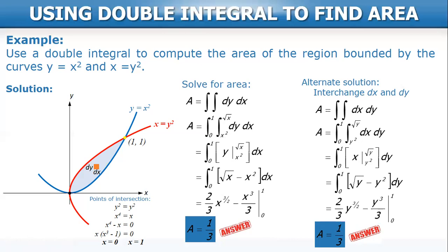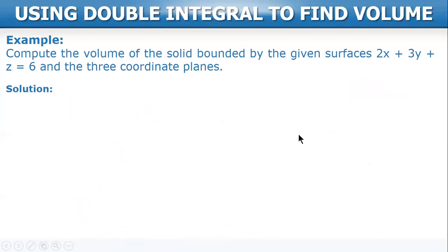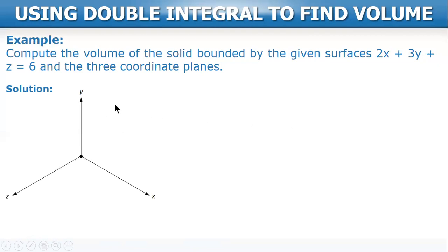Always remember: for a double integral, go back to the rectangular strip to guide your limits. Another application is to use double integrals to find volume. Let's compute the volume of the solid bounded by the surfaces 2x + 3y + z = 6 and the three coordinate planes — the xy plane, the yz plane, and the xz plane.